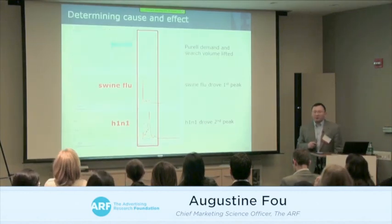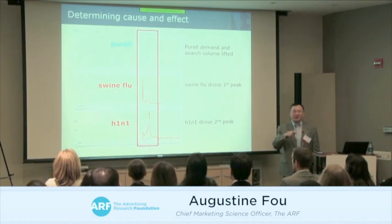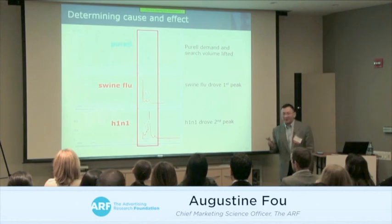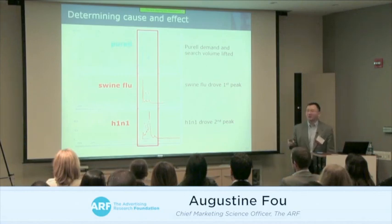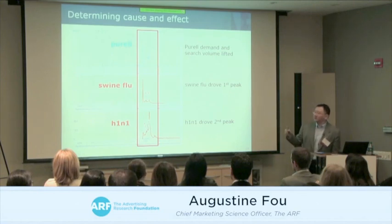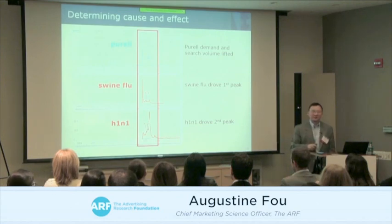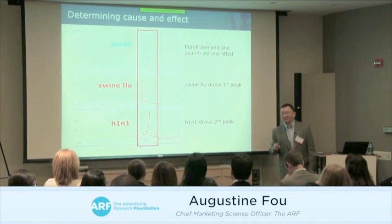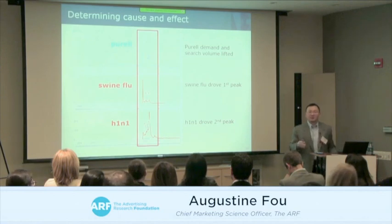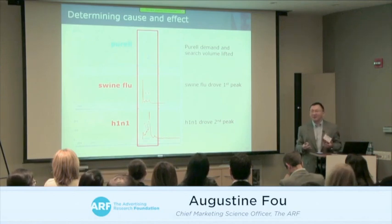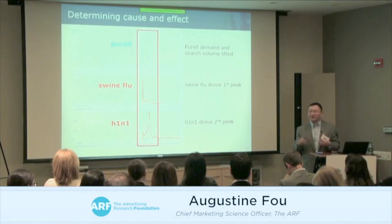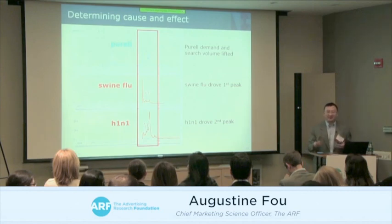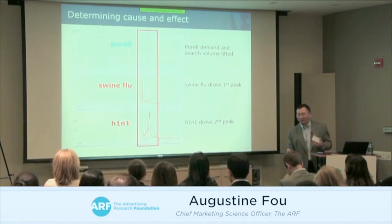Look at search volume for Purell — it chugged along horizontally despite their advertising, but in 2009 there were two massive spikes. When I overlay swine flu and H1N1 searches, they correspond perfectly in time. This kind of big data lets you identify cause and effect, and understand what actually drives search volume for your brand.